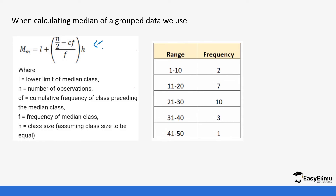This is the formula used when calculating the median of grouped data. The lower limit (L) is the lower limit of the median class. n is the number of observations or the total frequency. CF is the cumulative frequency of the class preceding the median class. f is the frequency of the median class, and h is the class size. We need to use the class limits for this.